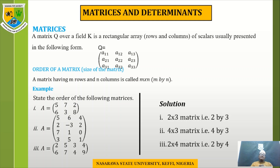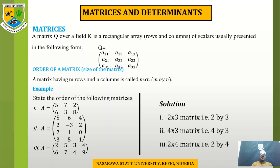Looking at the previous example: if we calculate the rows we have three rows and three columns, so the order of that matrix is 3 by 3. For the first example given, calculate the total number of rows — we have two rows: the first row is 5, 7, 2 and the second row is 6, 3, 8. The columns reading from top to bottom are: 5 to 6, 7 to 3, and 2 to 8 — so we have three columns. Therefore the order of the first matrix is 2 by 3.